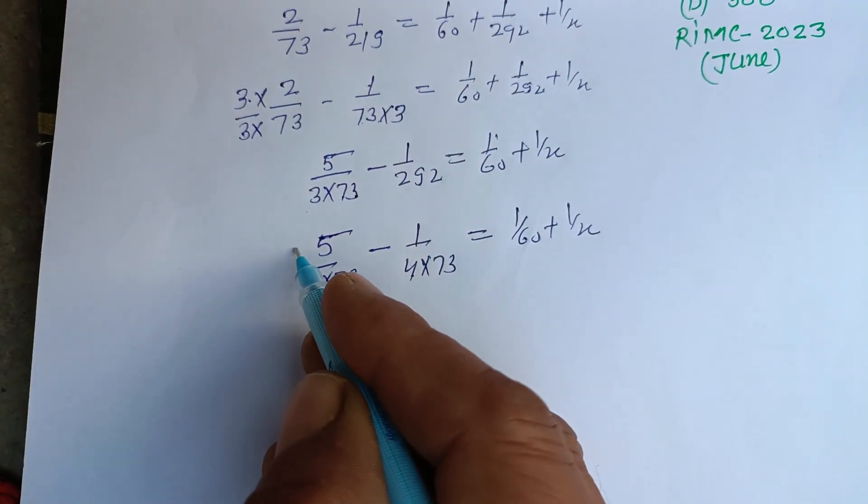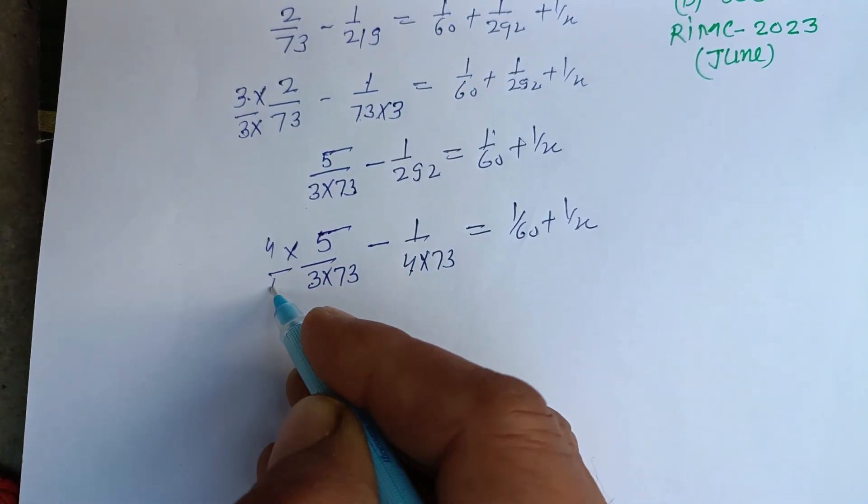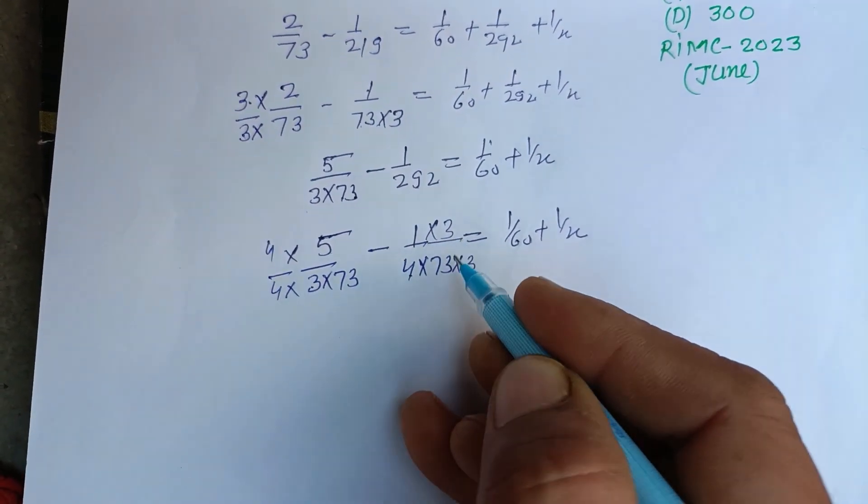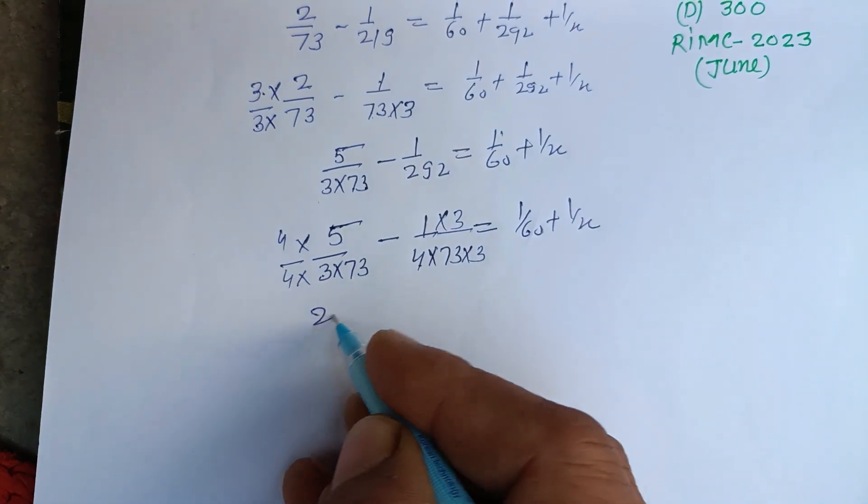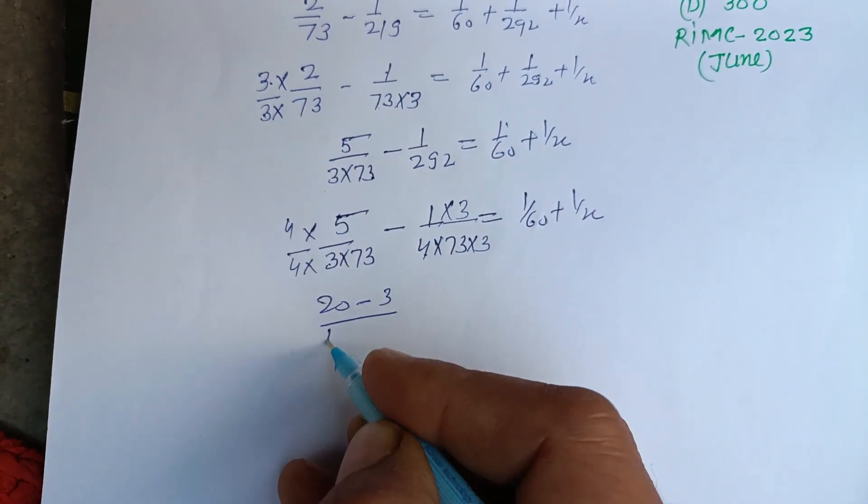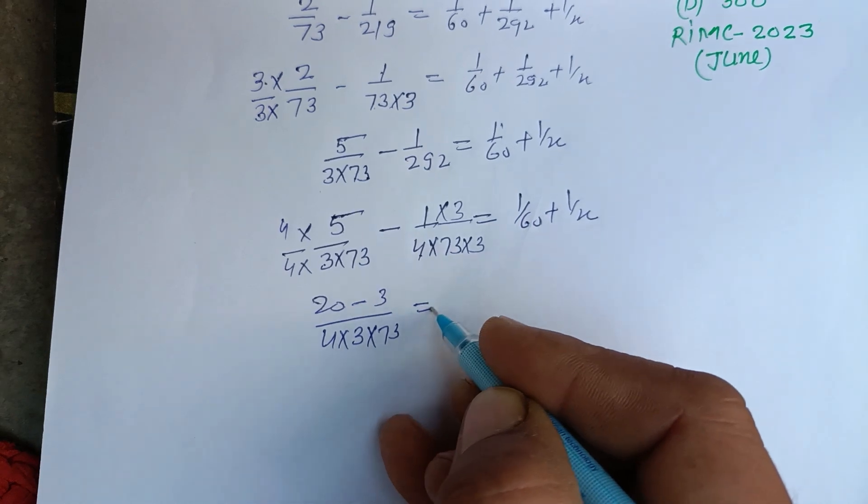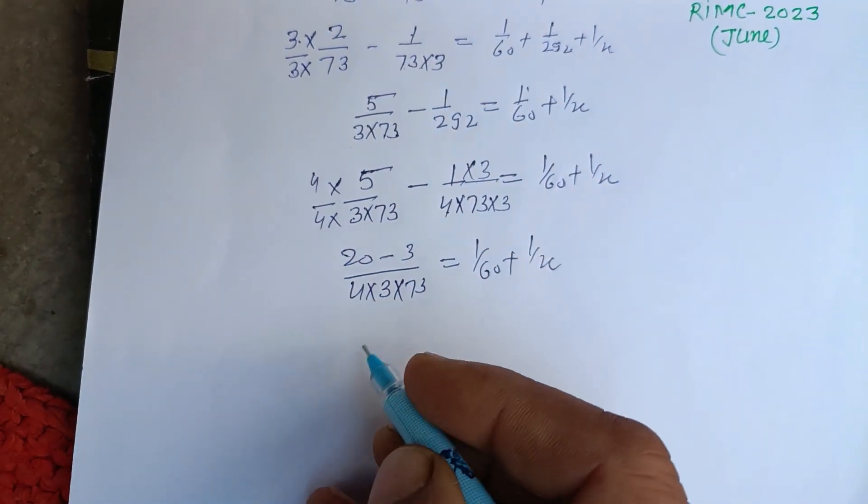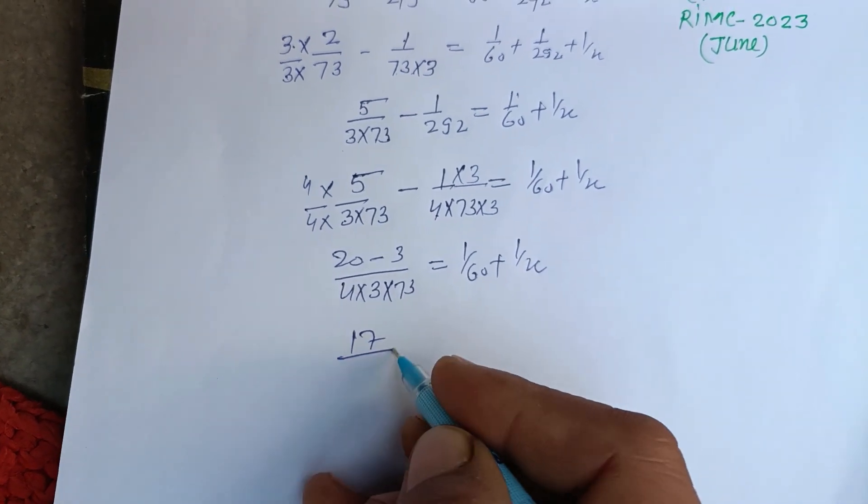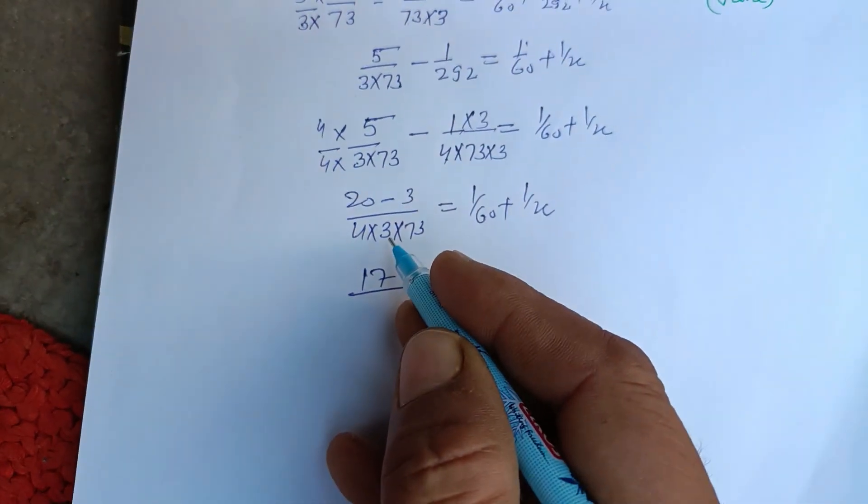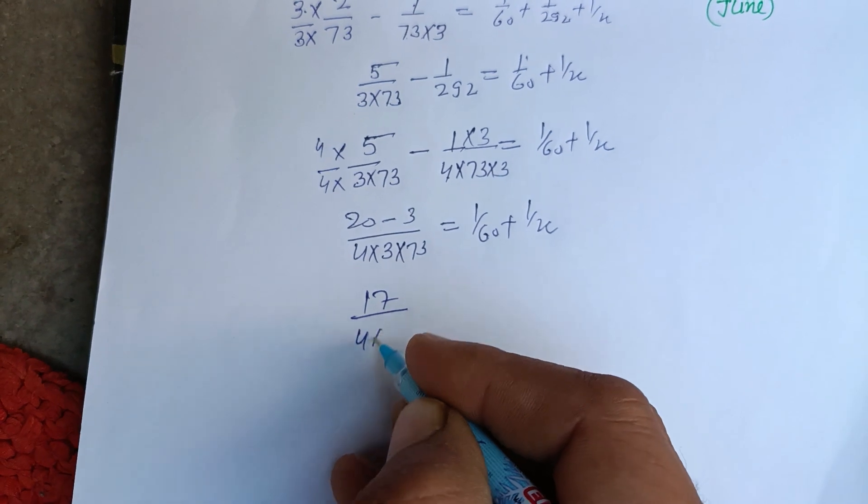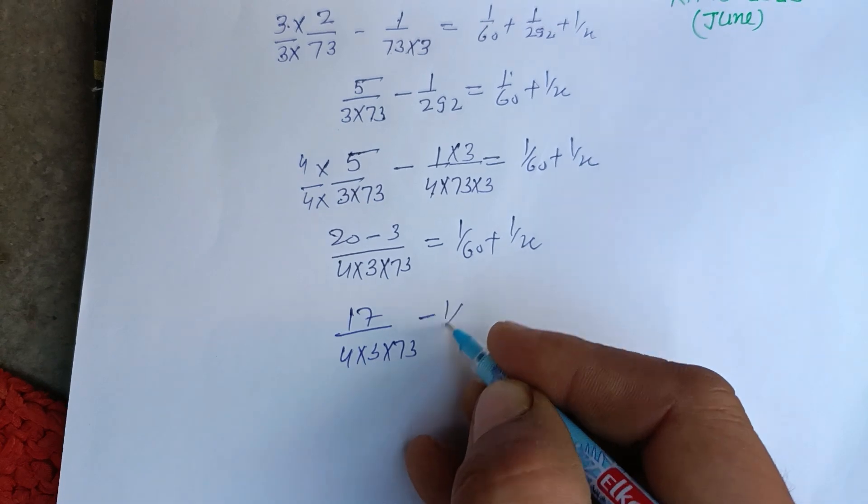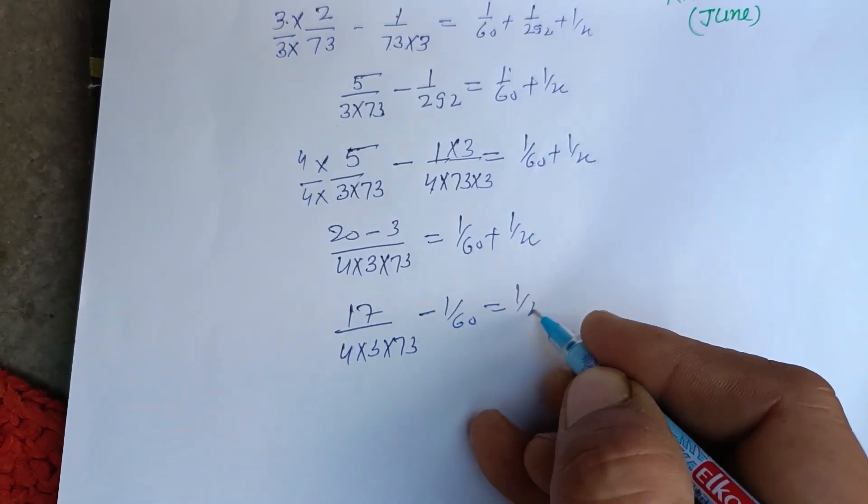We multiply this by 4 and this by 3 so the denominator becomes the same. (4×5 - 3)/(4×3×73) = (20 - 3)/(12×73) = 17/(12×73) = 1/60 + 1/x. So 17/(12×73) - 1/60 = 1/x.